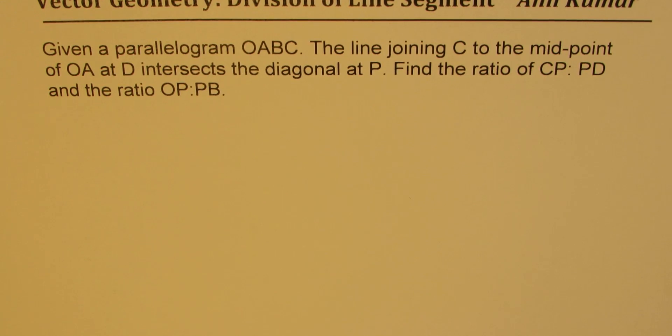The question here is: given a parallelogram OABC, the line joining C to the midpoint of OA at D intersects the diagonal at P. Find the ratio of CP to PD and the ratio of OP to PB.